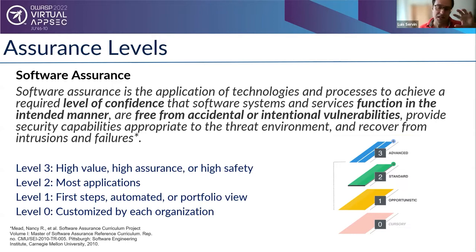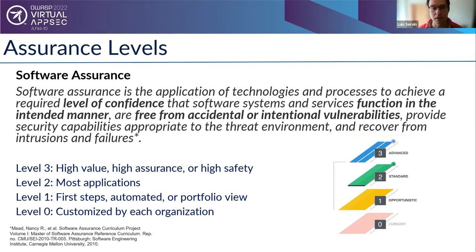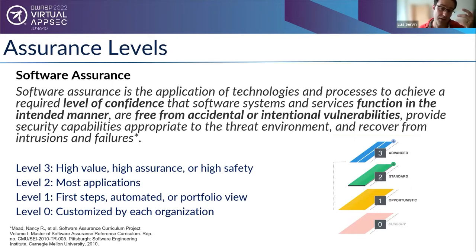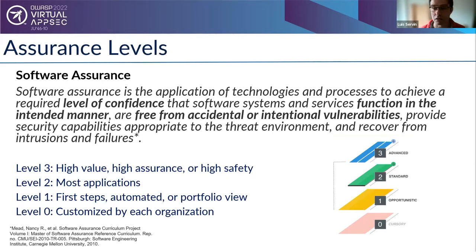ASVS provides level zero where you customize freely, then three defined levels. Level one is the baseline — you're just starting, get this done, and you'll be doing your due diligence. Level two is for systems with higher exposure in confidentiality, integrity, availability, or data privacy. Level three is for the most critical systems — something that takes people to the moon. These are the levels of assurance needed when dealing with software.